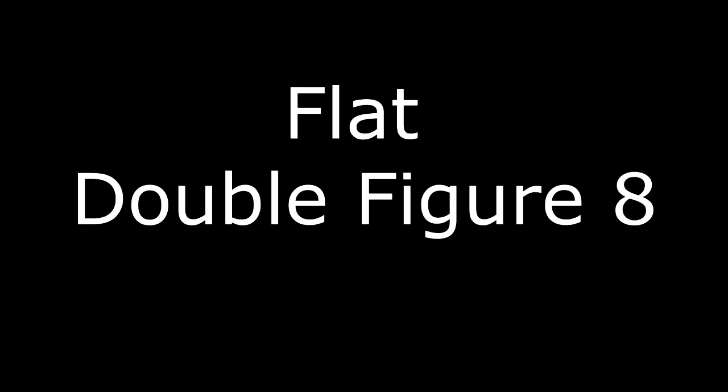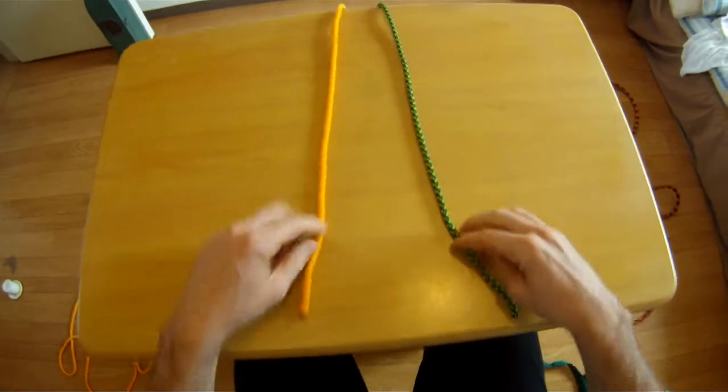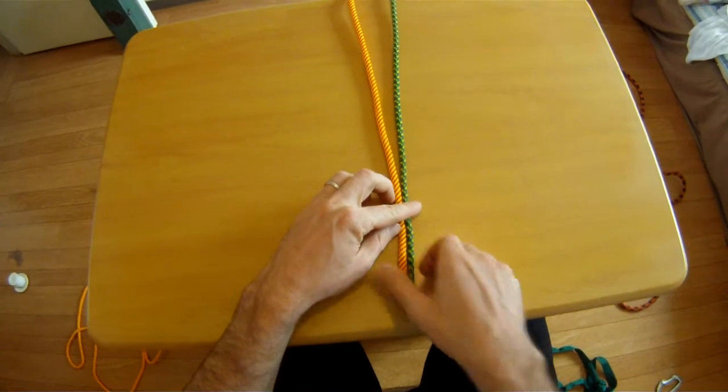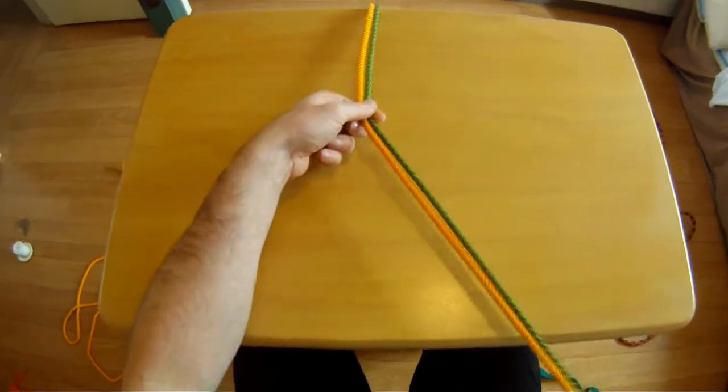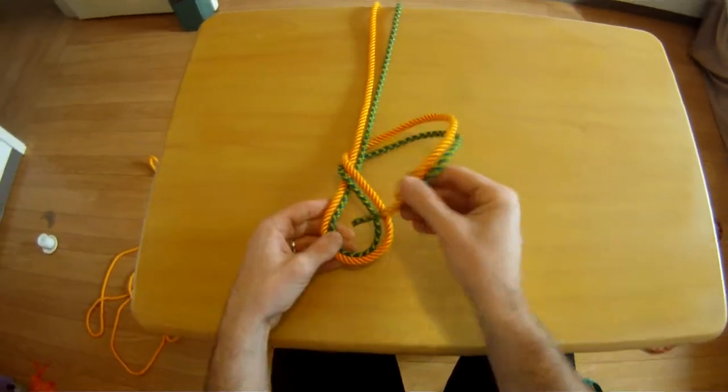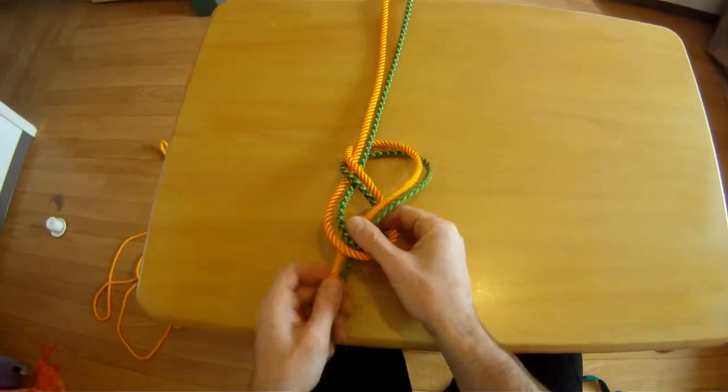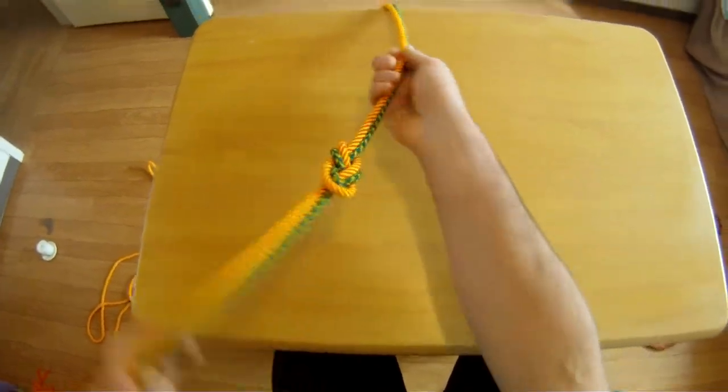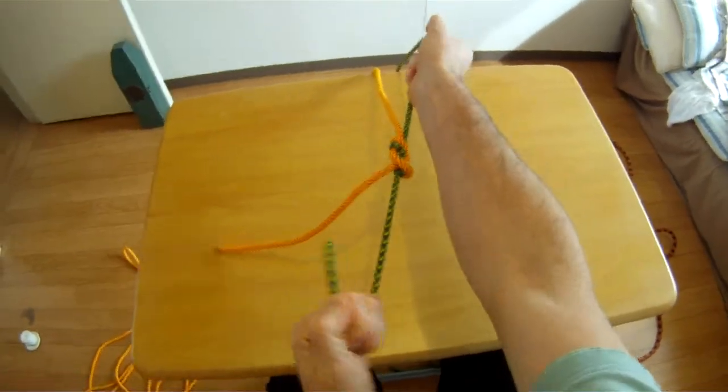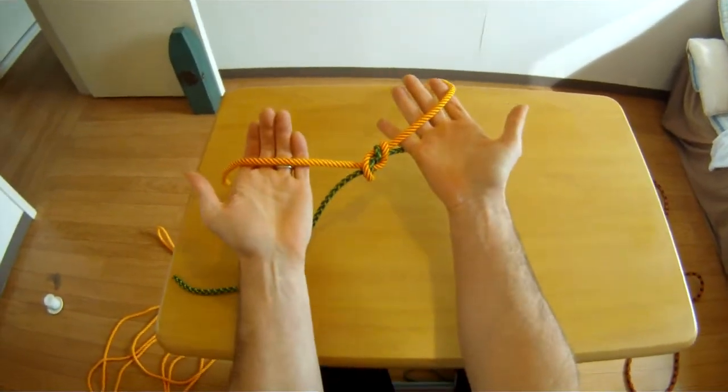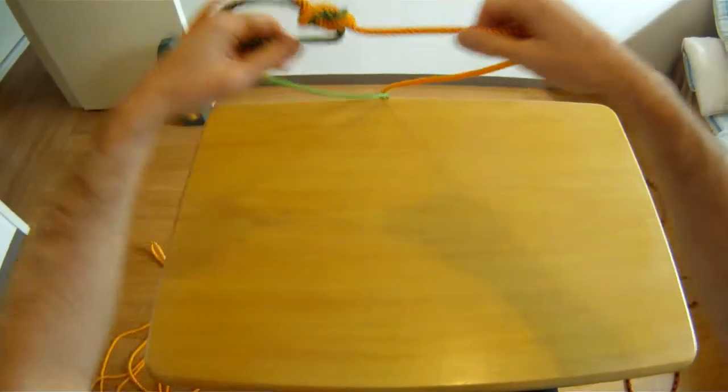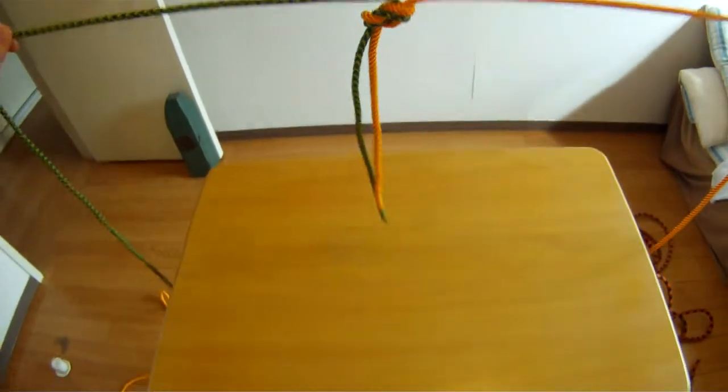The flat double figure eight is often used to connect two ropes. So, you put the two ropes ends together, and treat them as if they were a single rope, and tie your basic figure eight knot. This knot is sometimes used as a rappel knot to join two ropes. However, this is extremely dangerous, and should never be used in rock climbing. The flat figure eight is not appropriate for rock climbing use, as it can fail.